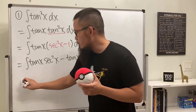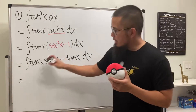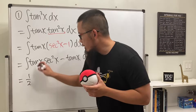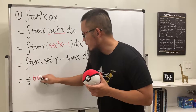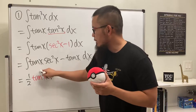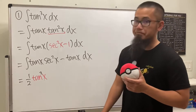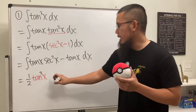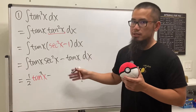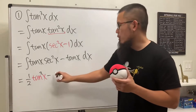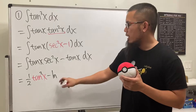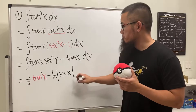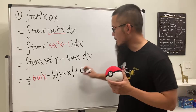You can go ahead and try that — I'll leave that to you. The answer for the first part is one half tangent squared x. For the second part, which was minus tangent x, that is just a standard integral giving us ln of the absolute value of secant x. That's the first one.